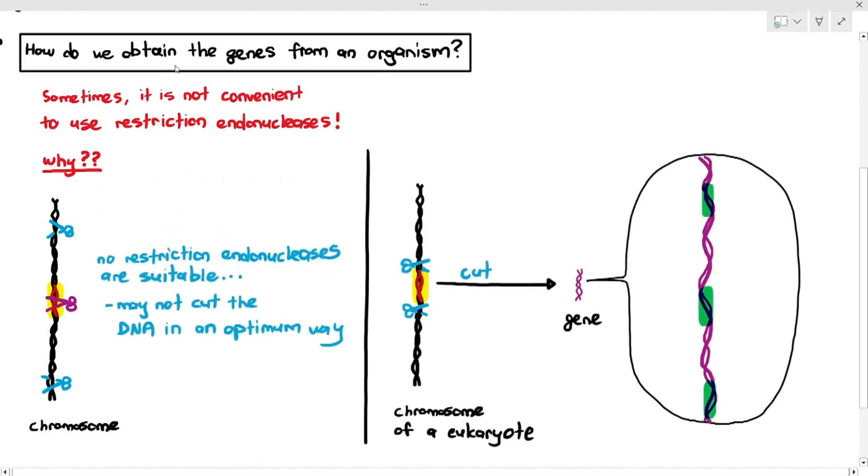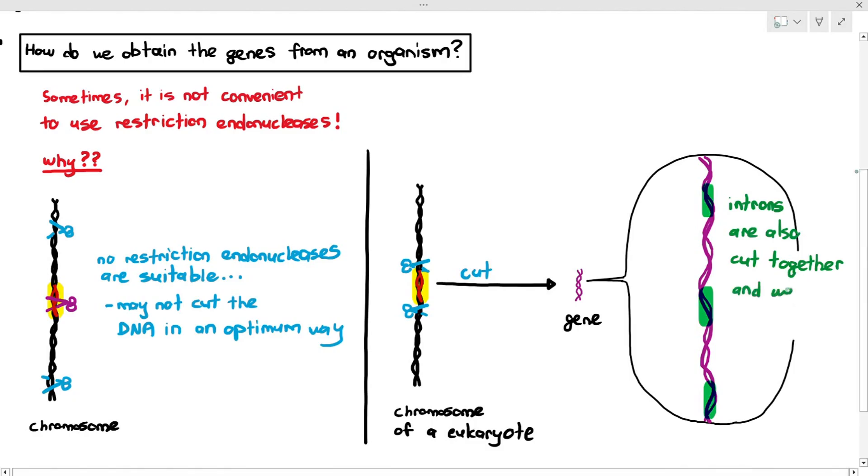Now, in the eukaryotic chromosome, chapter 6, I told you that for eukaryotes, the genes will contain something known as introns, which are just the interrupting sequences. So if you are able to cut the gene directly from the chromosome using the enzyme, yes, you may get the gene, but you will also get the introns together, and we don't want the introns. So we have a problem.